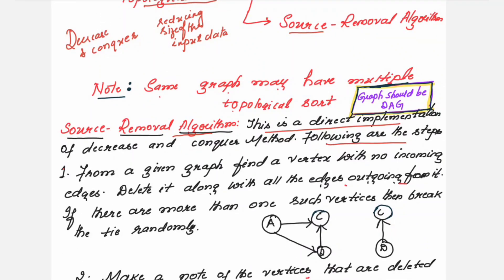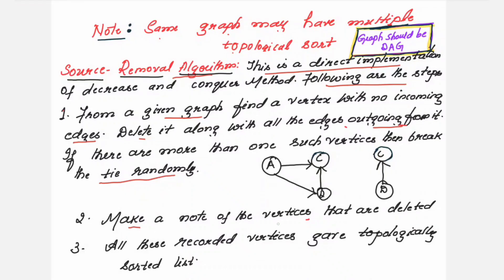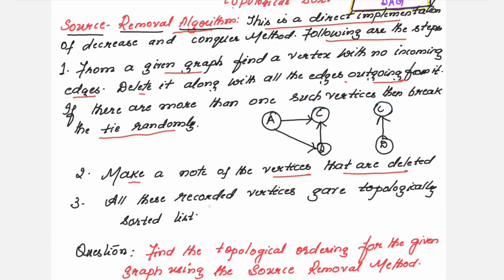The steps for the source removal algorithm are: first, from a given graph find a vertex with no incoming edges. Delete it along with all edges outgoing from it. If there are more than one such vertex, break the tie randomly. Second, make a note of the deleted vertices. Third, all these recorded vertices give the topological sorted list.